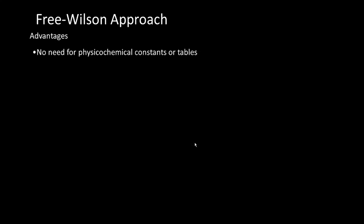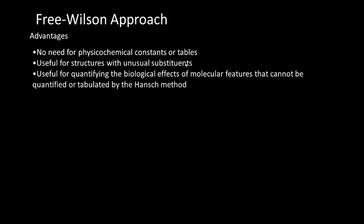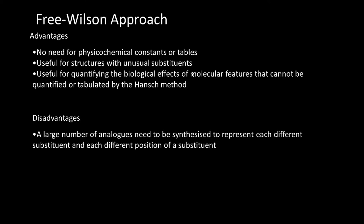The contribution of substituent n to activity is determined by the value of kn. z is a constant representing the overall activity of the structures studied. The advantages are: no need for physicochemical constants or tables, and it is useful for structures with unusual substituents — quantifying biological effects of molecular features that cannot be quantified by the Hansch method. For each complicated substituent we can find out its contribution.